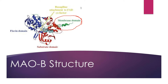The active site of each subunit contains an entrance cavity and a substrate cavity. The hydrophobic nature of the amino acids surrounding this cavity prevents water from entering. Four important amino acids are responsible for the separation of these two cavities: tyrosine, phenylalanine, leucine, and isoleucine. The isoleucine residue acts as a gate that can be in an open or closed position, allowing substrates to move from the entrance cavity into the more active substrate cavity.